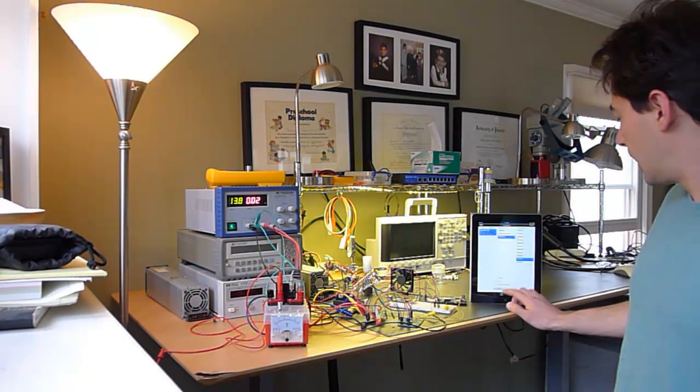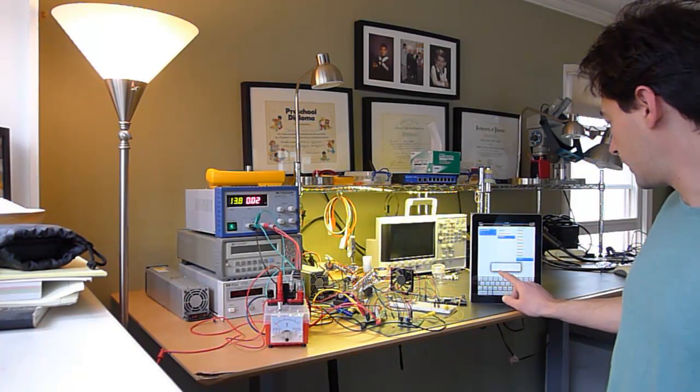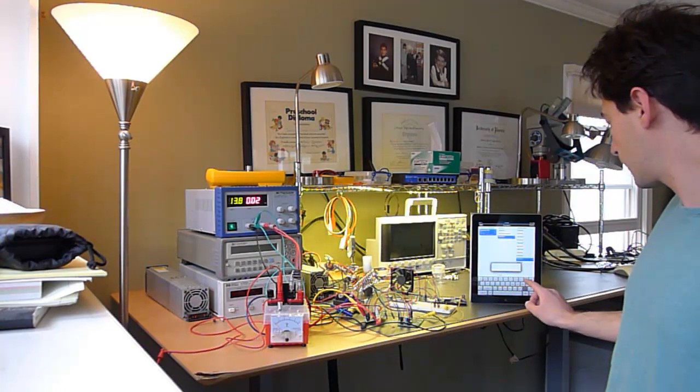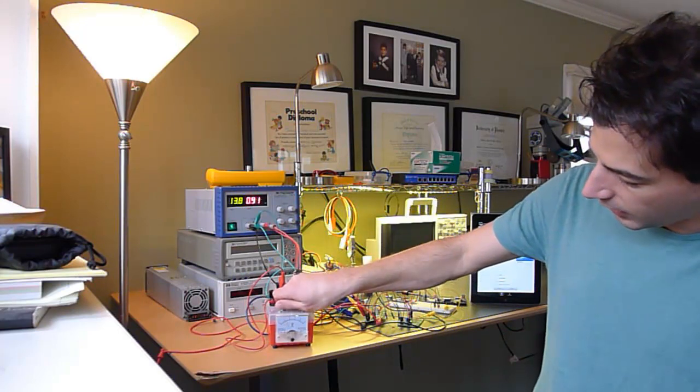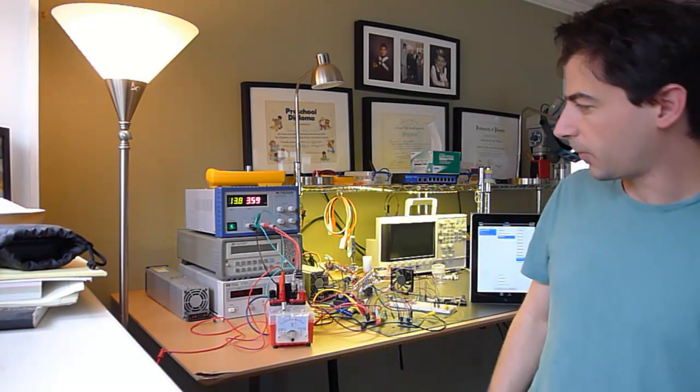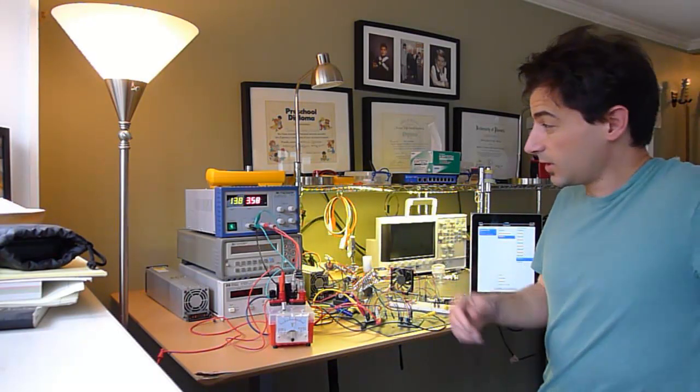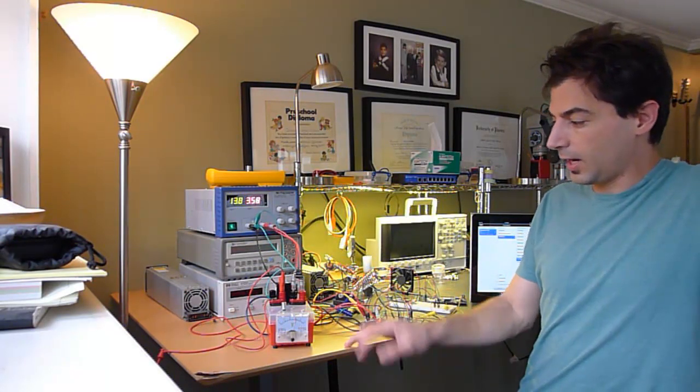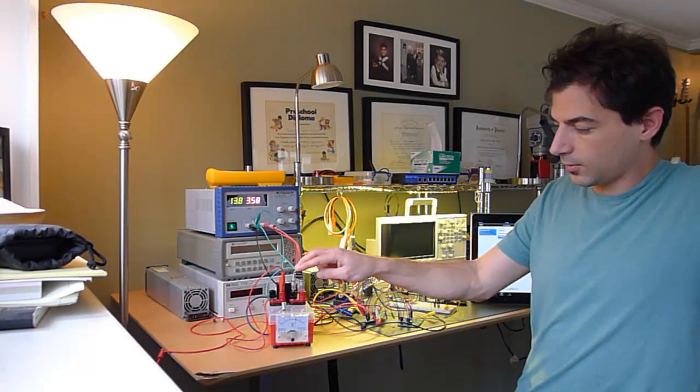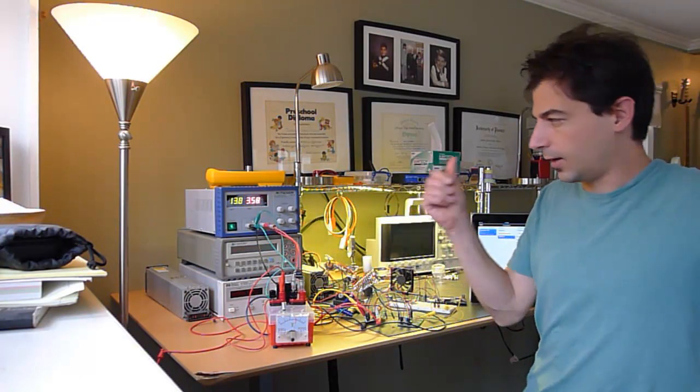But it can source lots of current. So let's take a look at that. We'll set it to 4 amps again. And then we'll go ahead and burn 3 amps. Now this is an iPhone controlled power supply that's burning 3 amps through this fuse which is getting warm.